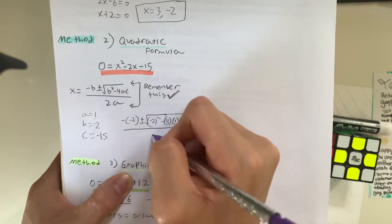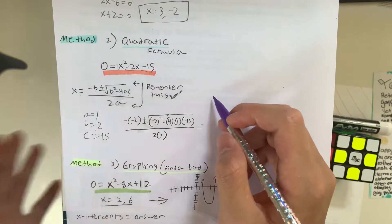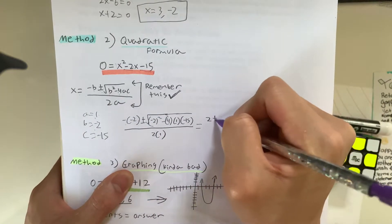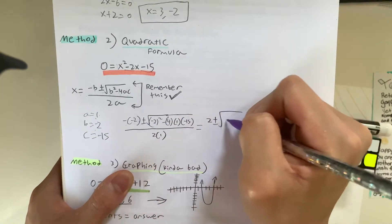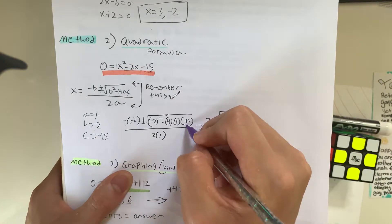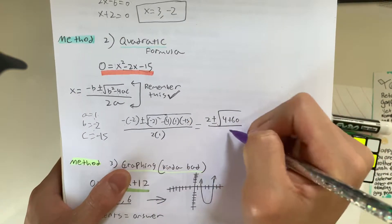And then, we can distribute this and simplify, giving us 2, negative negative 2 is 2, plus minus square root of 4, minus 4 times 15 is 60, negative of negative 60 is 60, plus 60 over 2.